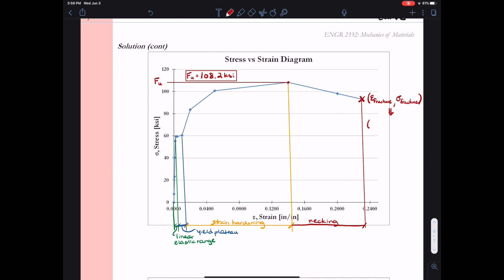So if I check my table, I see that the strain at fracture was 0.23000 and that the stress at fracture was 93.10 KSI. So that is the stress and the strain at fracture.